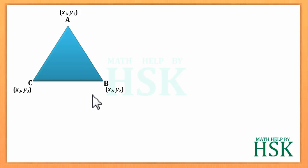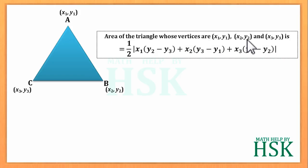Area of the triangle whose vertices are (x₁, y₁), (x₂, y₂), and (x₃, y₃) is given by 1/2 times [x₁(y₂ - y₃) + x₂(y₃ - y₁) + x₃(y₁ - y₂)].